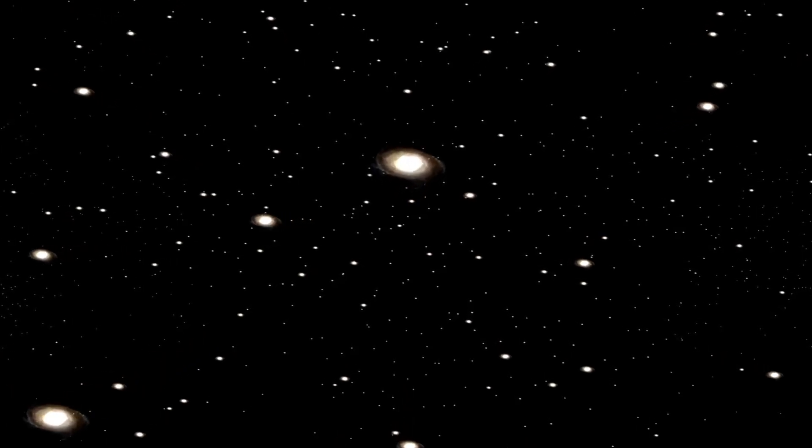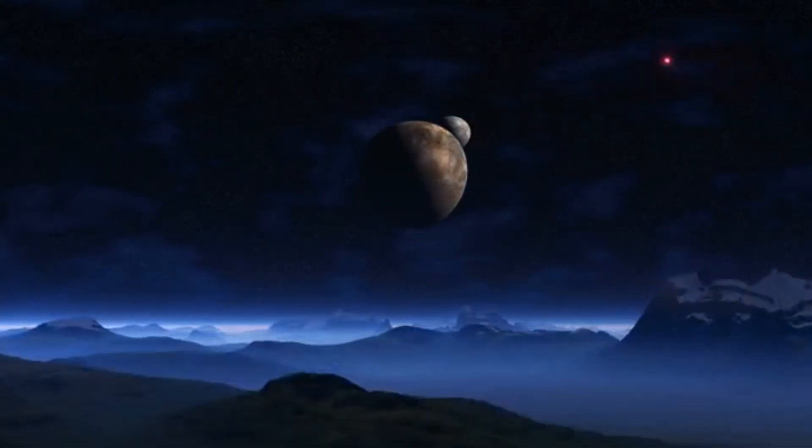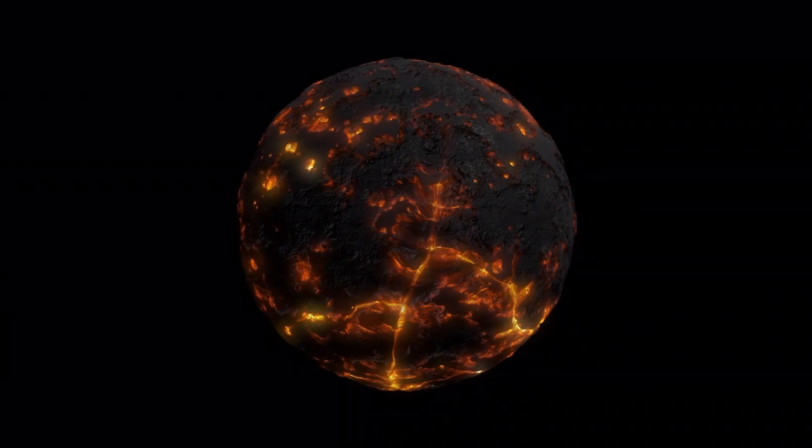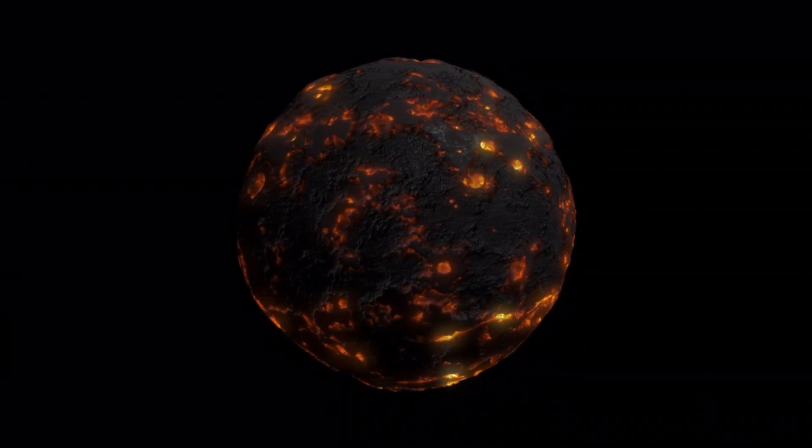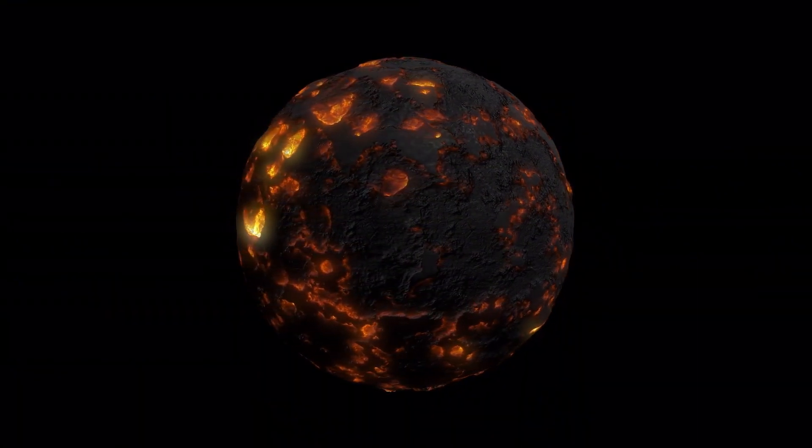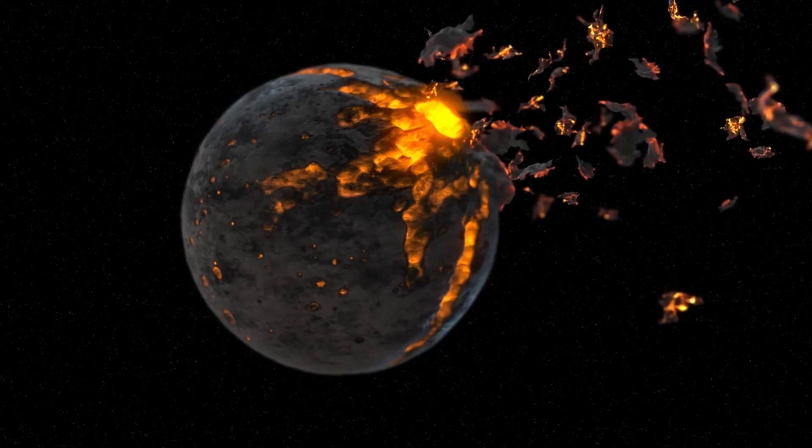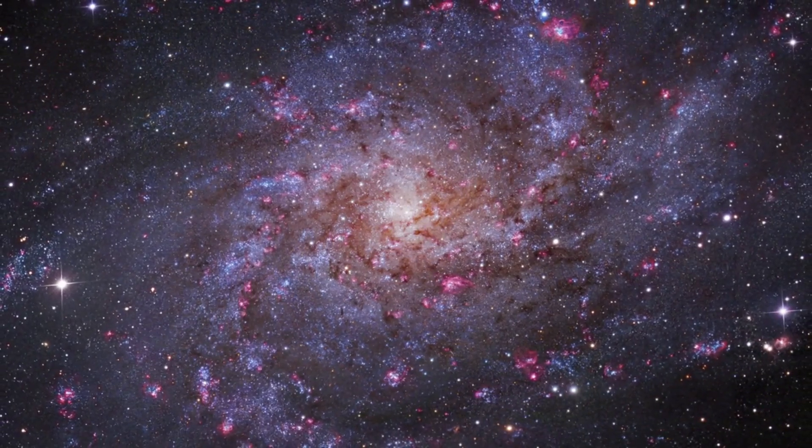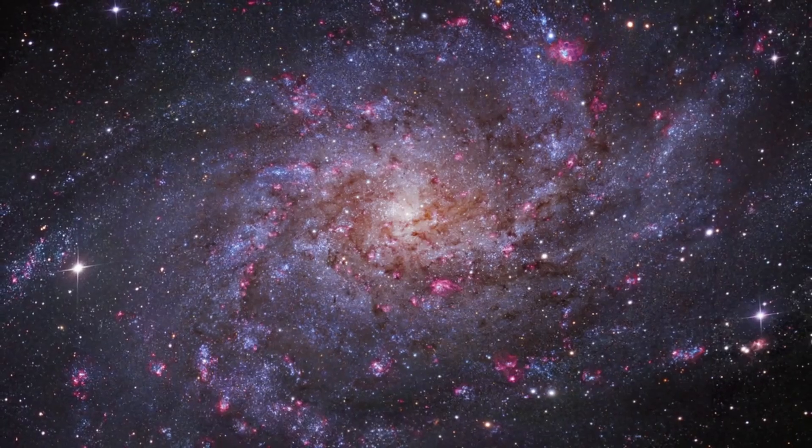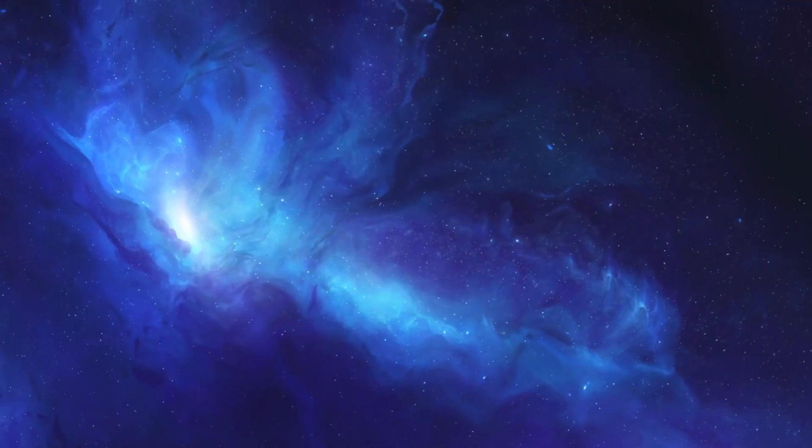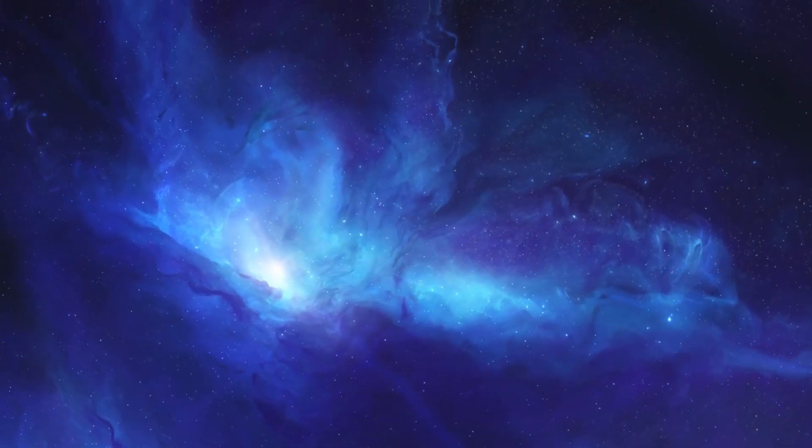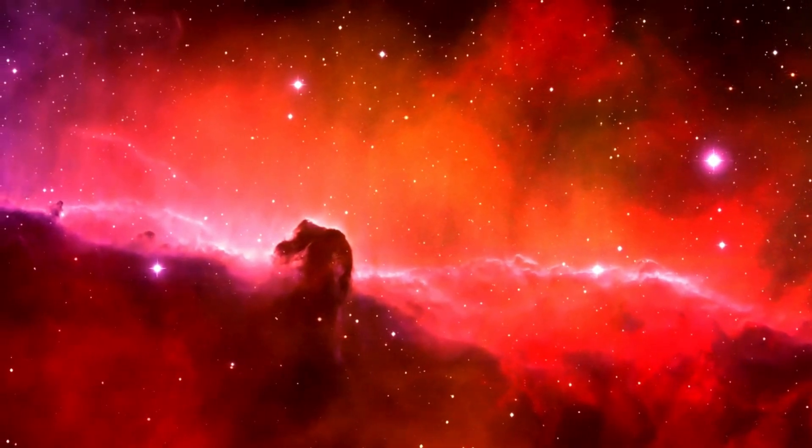Rogue planets drifting through space without orbiting a star present an additional unpredictable element. These planets, once part of a star system, are expelled due to gravitational disturbances or other cosmic events, such as the nearby passage of another star or dynamic instability in other systems. Over time, these wandering planets can traverse vast distances, possibly arriving at regions far from their origin during their solitary journey. There is a chance of them encountering other star systems. If one of these rogue planets enters another nearby planetary system, there is a slight possibility of a collision with a planet in that system. However, given the vast and overwhelmingly empty nature of space, the likelihood of a rogue planet directly impacting another planet is quite low.